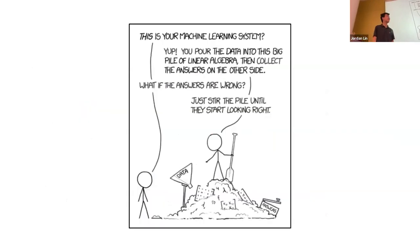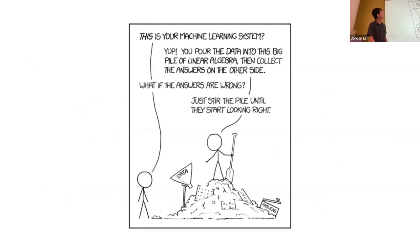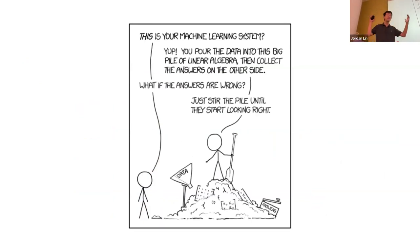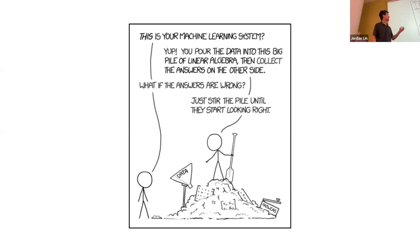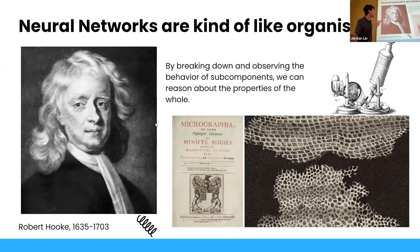Here's a relevant xkcd: is this your machine learning system? You pour the data in — the pile dataset into your ML system — then filter it through this linear algebra, and you have your classifier on the other side. You just do all this training until your ML model looks good. But what's actually going on inside this huge pile?